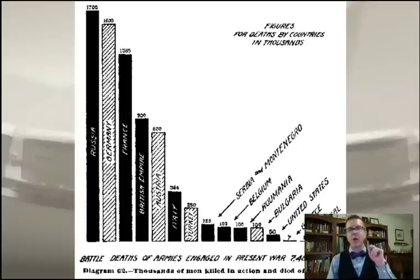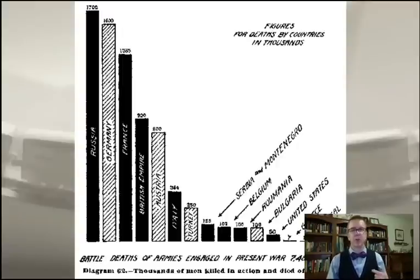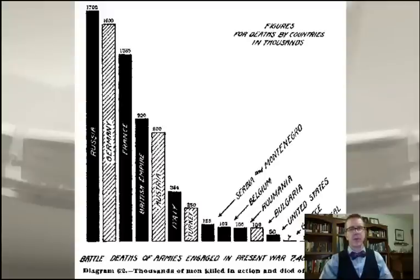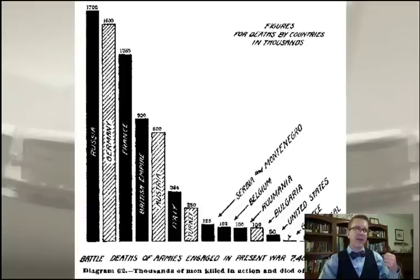These are battlefield deaths in armies only engaged in the war: 1.7 million in Russia, 1.6 million in Germany, almost 1.4 million from France, 900,000 from the British Empire, 800,000 from Austria-Hungary, and the figures go on. The United States: only 50,000 — why so few? We don't get involved until the last year, and by that time Germany is on the verge of collapse along with Austria, Turkey, and the other Central Powers. That's a quick introduction to the background that leads to World War I. We'll talk more about imperialism in Chapters 21 and 22, and more about the war itself in Chapter 23. See you then.